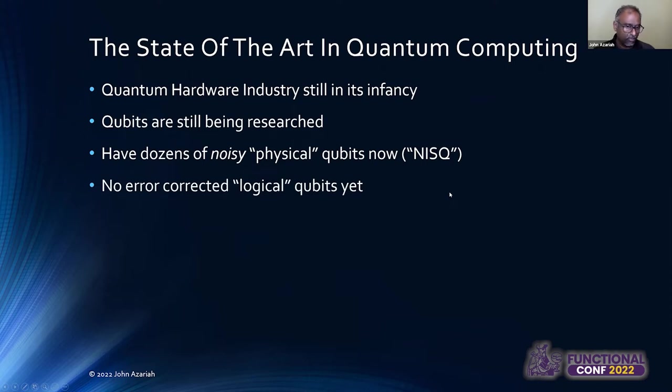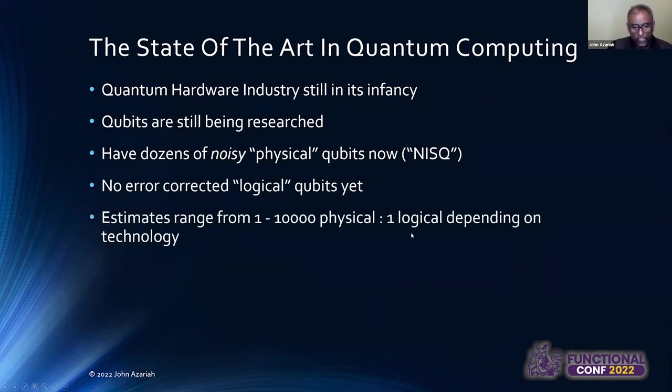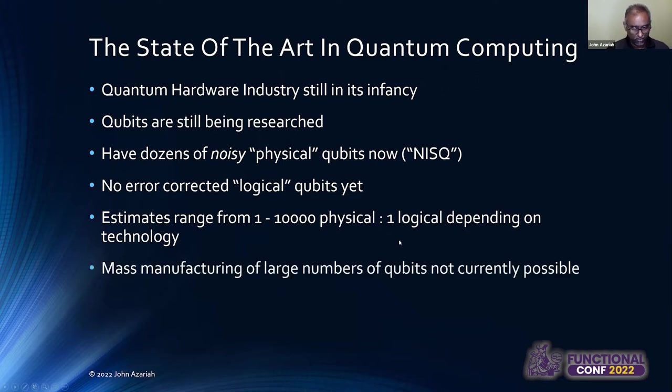So, we don't have any other correct logical qubits at this point. So, if you want to really be brutal about it, depending on the technology that you use to build the physical qubit, you need between 1,000 and 10,000 physical qubits to create one logical qubit. And because we only have the order of a few dozen physical qubits at this point, you can safely say that we don't even have one logical qubit.